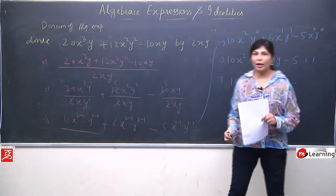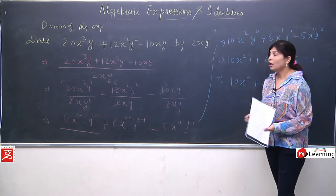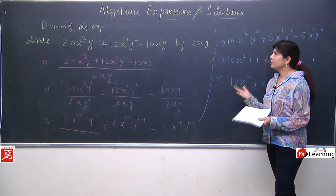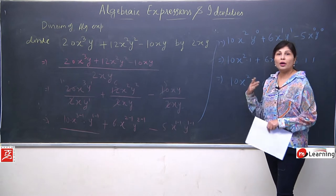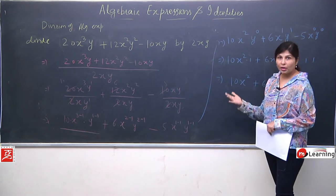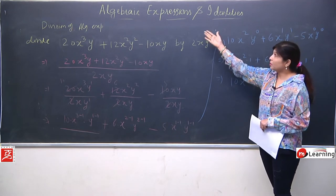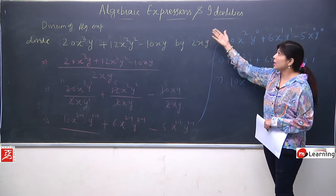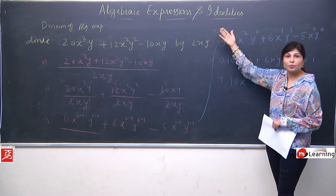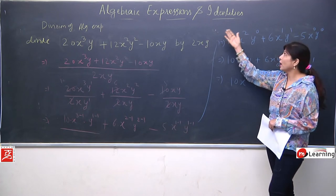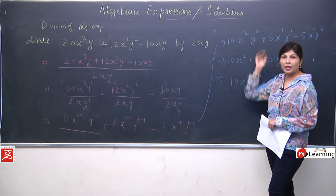Enough practice ho li hai. Ab hum is chapter ko aage continue karenge. Humara main chapter tha algebraic expressions and its identities. Ab hum identities ke baare mein padhenge.